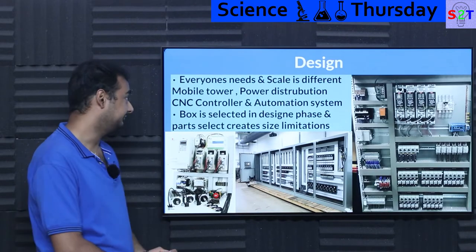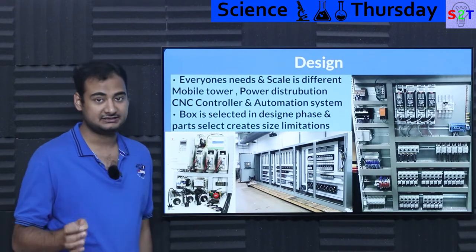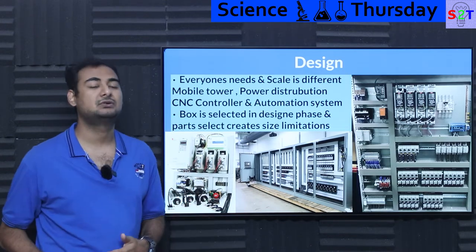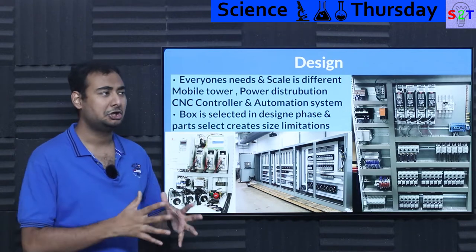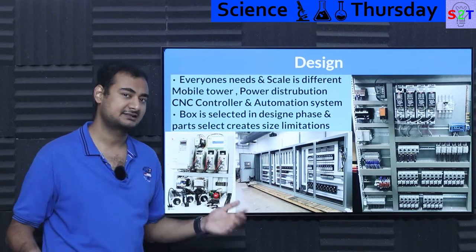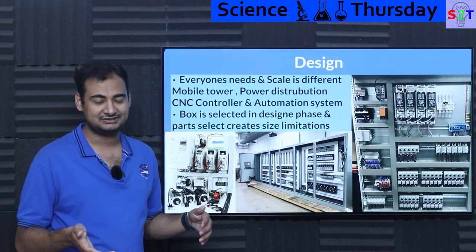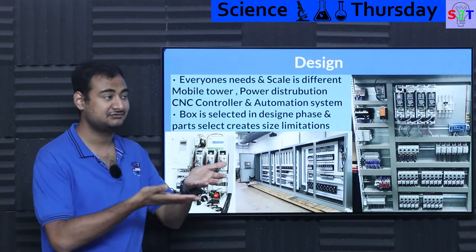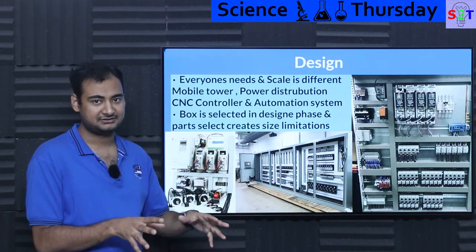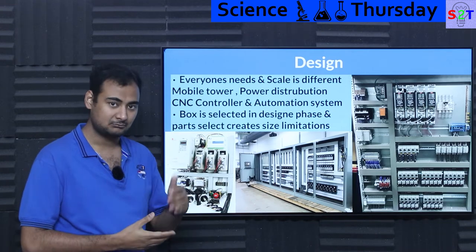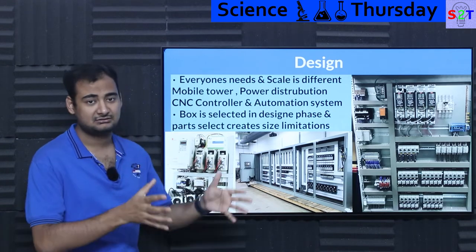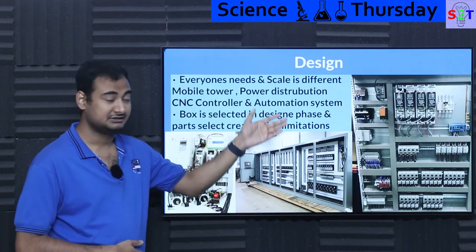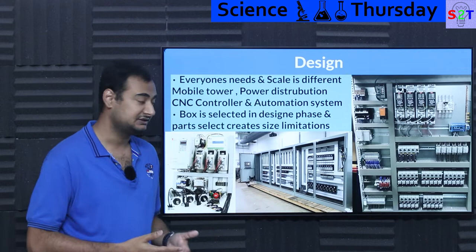Every need and scale is different. There are people who need it for a mobile tower and each will have different requirements. Some mobile towers have a huge box with a giant battery, powered by a giant solar farm to keep the tower working 24x7. Some are very small, on top of a building. Sometimes it could be huge — like for power distribution for giant buildings, factories, or stadiums.